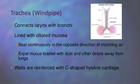The walls of the trachea are made of hyaline cartilage. At the mouth of the trachea, there is a valve called the epiglottis. The epiglottis prevents food from entering the trachea. It beats continuously in the opposite direction of incoming air, expelling mucus loaded with dust and other debris away from the lungs. The walls are reinforced with C-shaped hyaline cartilage.